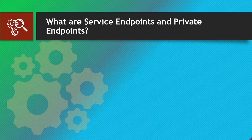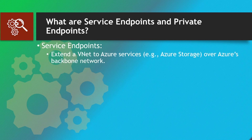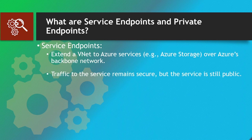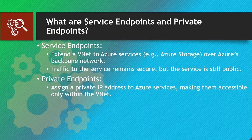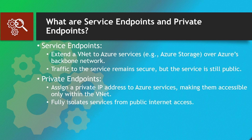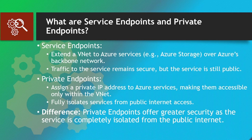What are service endpoints and private endpoints? Service endpoints extend the VNet to Azure services (e.g., Azure Storage) over Azure's backbone network; traffic to the service remains secure, but the service is still public. Private endpoints assign a private IP address to Azure services, making them accessible only within the VNet and fully isolating them from public internet access. Key difference: private endpoints offer greater security as the service is completely isolated from the public internet.